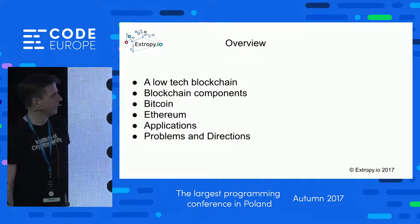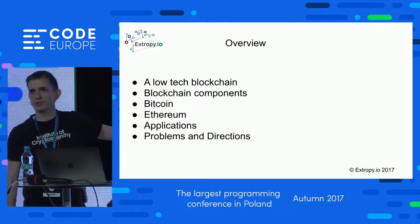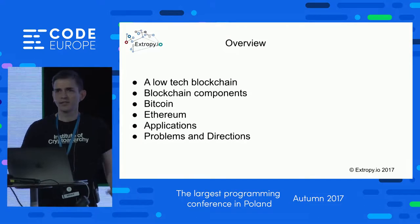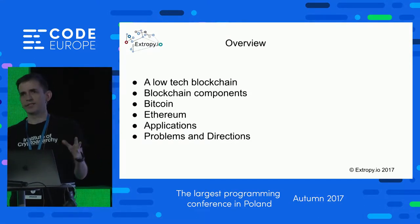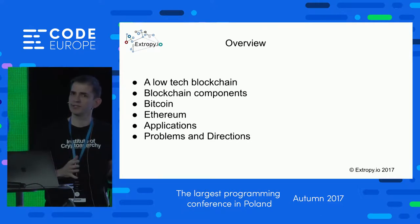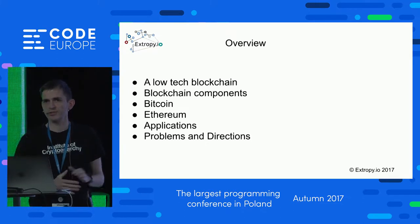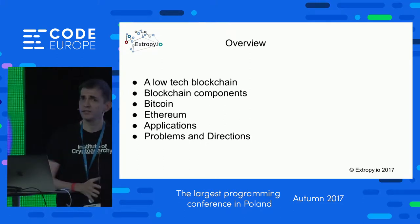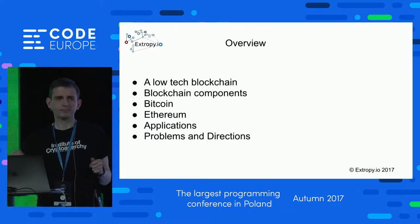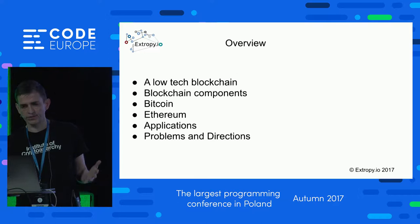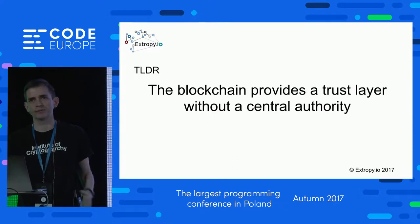What I'd like to cover today is first talk about an example of a low-tech blockchain, to introduce the ideas of what makes up a blockchain. If you understand those ideas and how they are special, you'll understand how applications written for the blockchain are special. We'll then talk about an actual implementation of blockchain, which is Bitcoin, move on to Ethereum, look at some applications of Ethereum, and then look at some of the problems in this space and directions we're going.